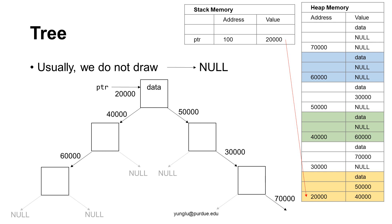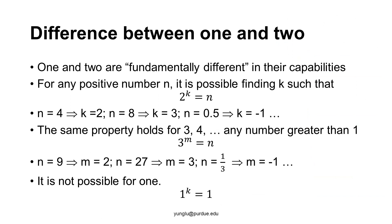A common question from many students is the difference between linked list and binary tree. The difference is profound due to the important properties of number theory. In a linked list, each piece of memory has only one link. In a binary tree, each piece of memory has two links. One and two are fundamentally different.